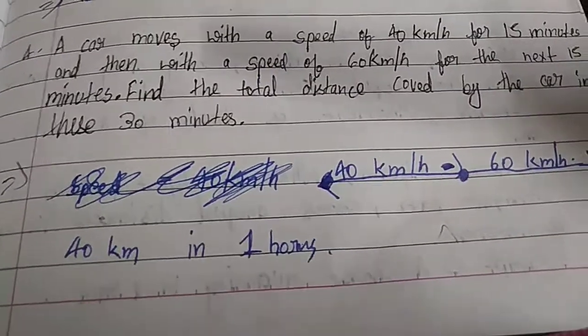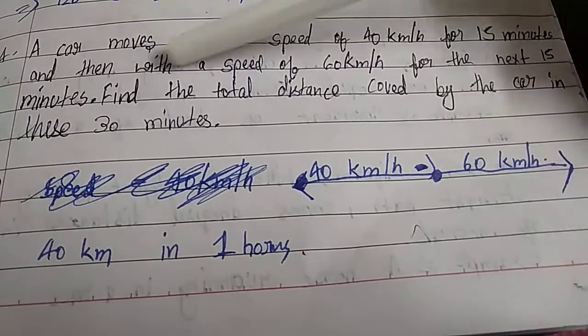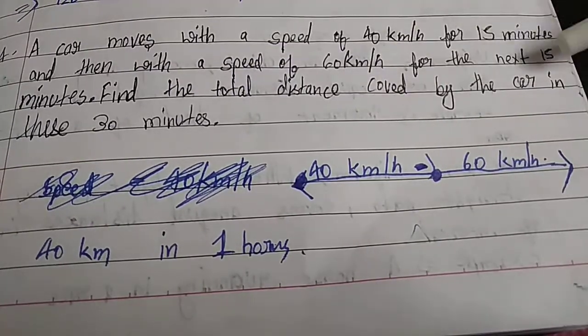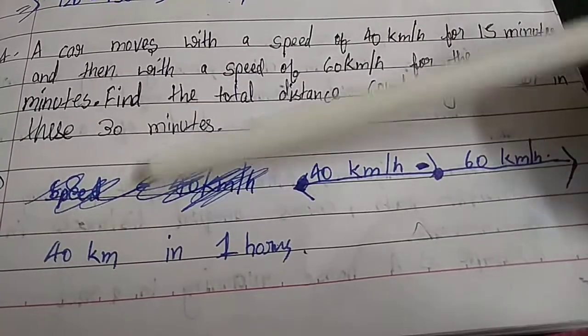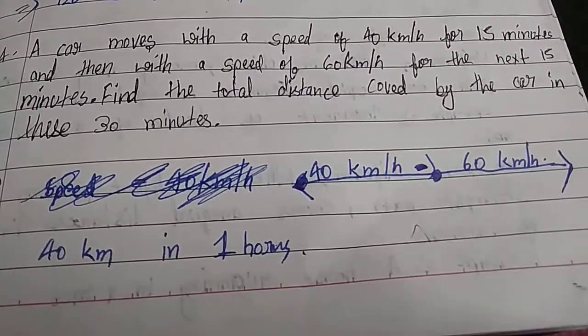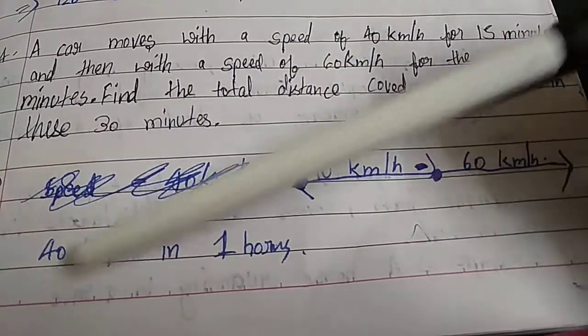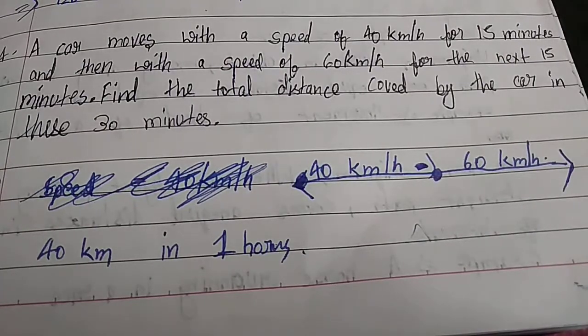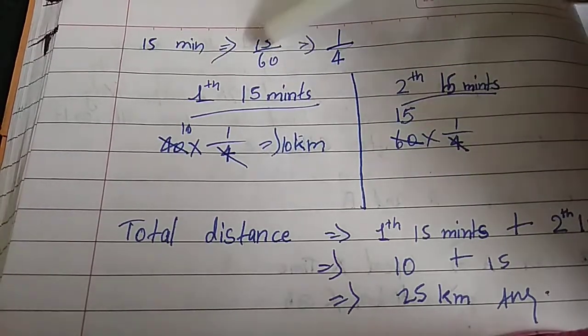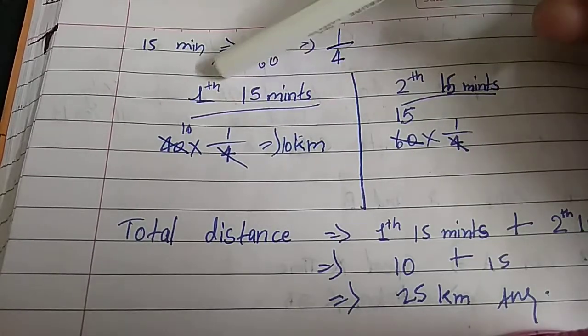Fourth question: One car moves with a speed of 40 kilometers per hour for 15 minutes and then with a speed of 60 kilometers per hour for the next 15 minutes. Find the total distance covered by the car in these 30 minutes. First we have a straight line. 40 kilometers per hour in one hour, then 15 upon 60 means, if we cut it, 1 upon 4 comes as our answer.